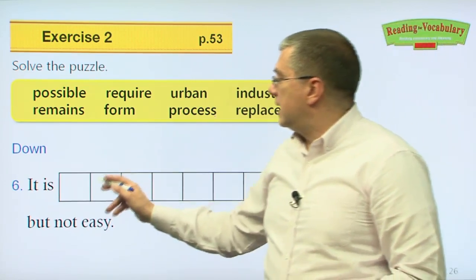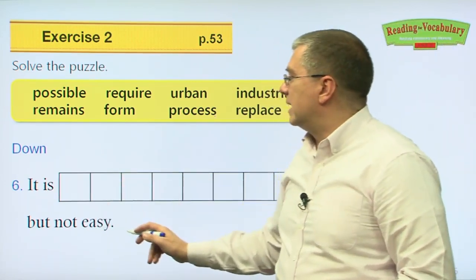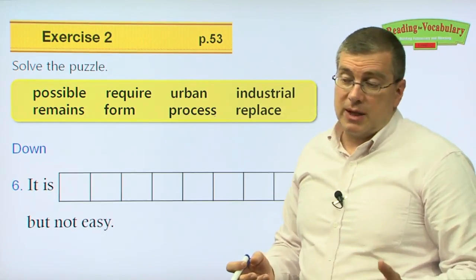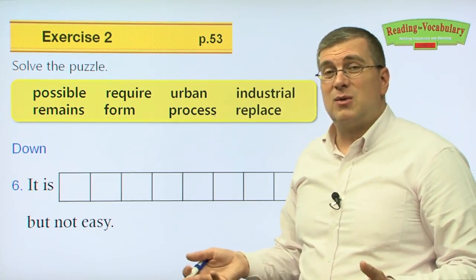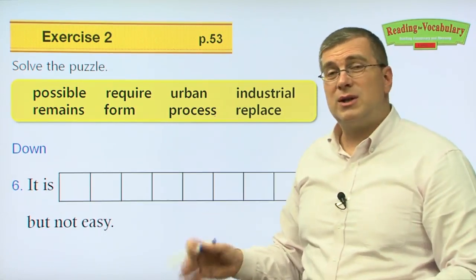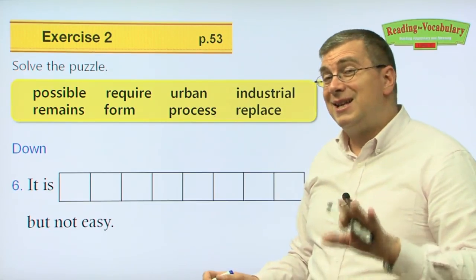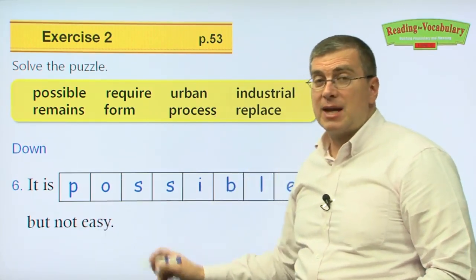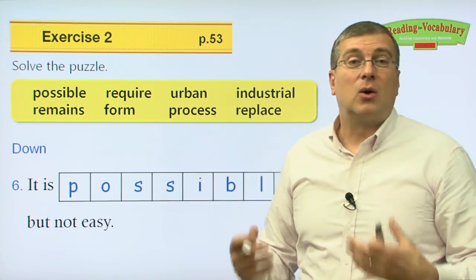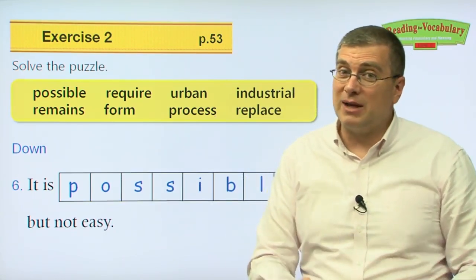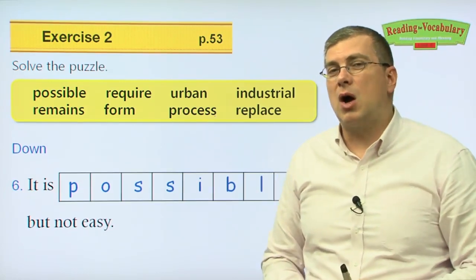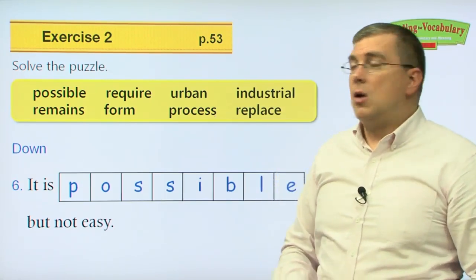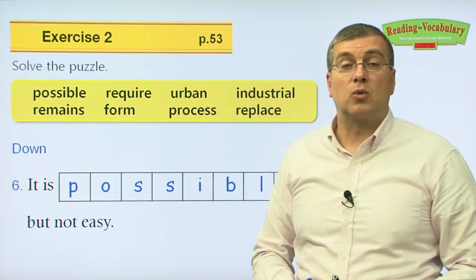Number six down: 'It is blank but not easy.' You can do many things. Some are very easy, some are very hard. Don't give up — even though it's very hard, you can do it. It's possible. It's possible but not easy. Just because something is hard doesn't mean it's not possible. Many things in your life will be hard to do, but you can do it — it is possible.